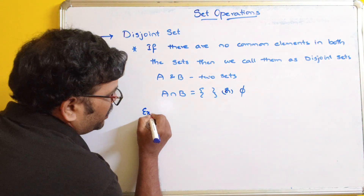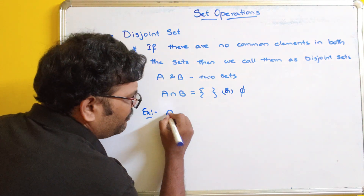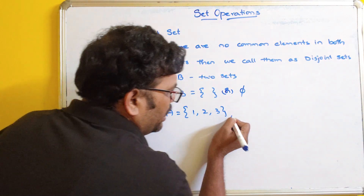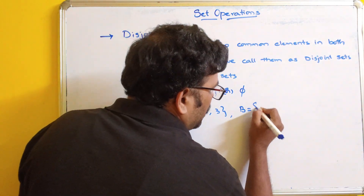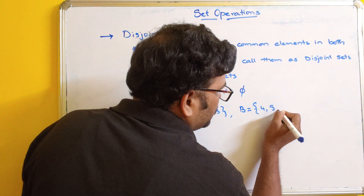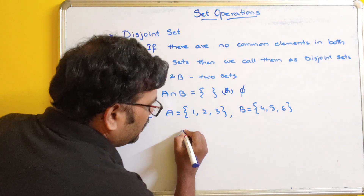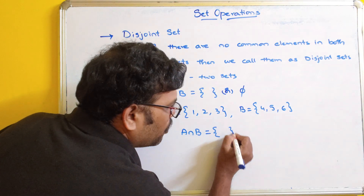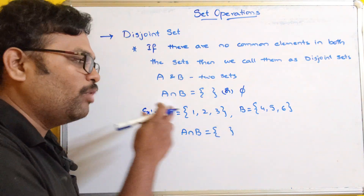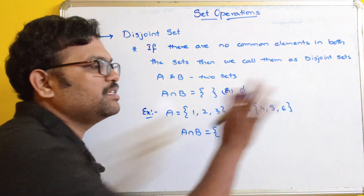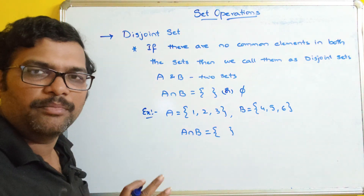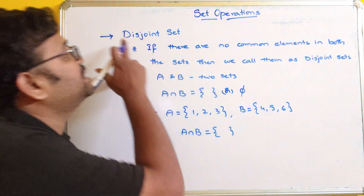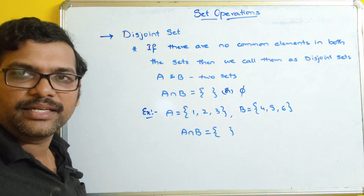For example, A has unique elements {1, 2, 3} and B has elements {4, 5, 6}. A intersection B means common elements — there are no common elements here. 1, 2, 3 are only in A and 4, 5, 6 are only in B. So in such a case, we can call A and B disjoint sets.